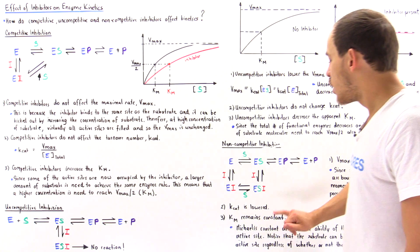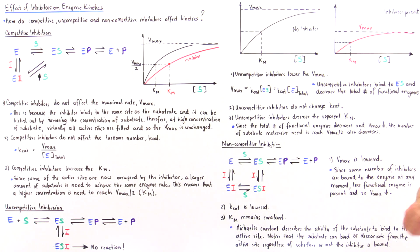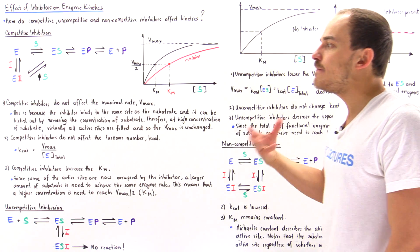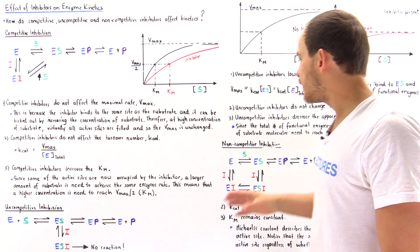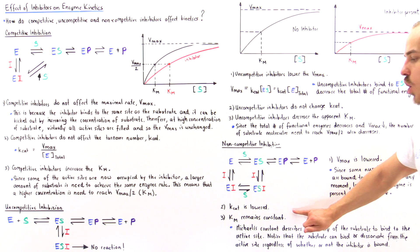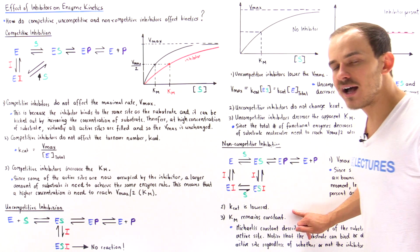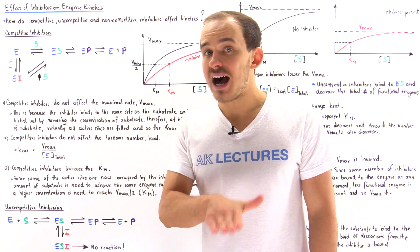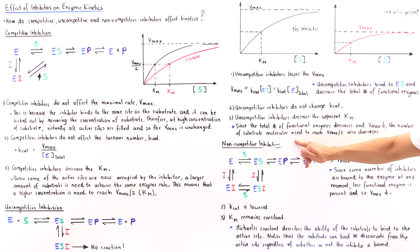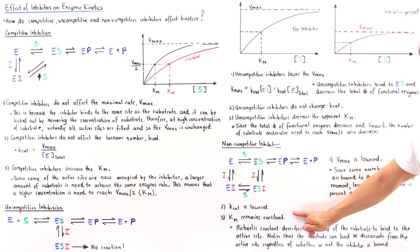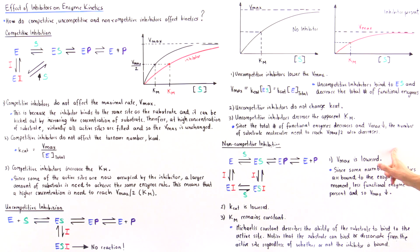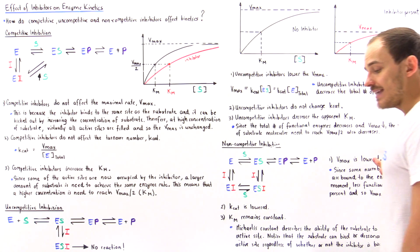And finally, what about the K-M value? This is perhaps the difficult part of understanding how non-competitive inhibitors actually affect enzyme kinetics. So why does the K-M remain constant? The K-M in the presence of a non-competitive inhibitor remains constant. How can this remain constant and yet the Vmax is lowered?